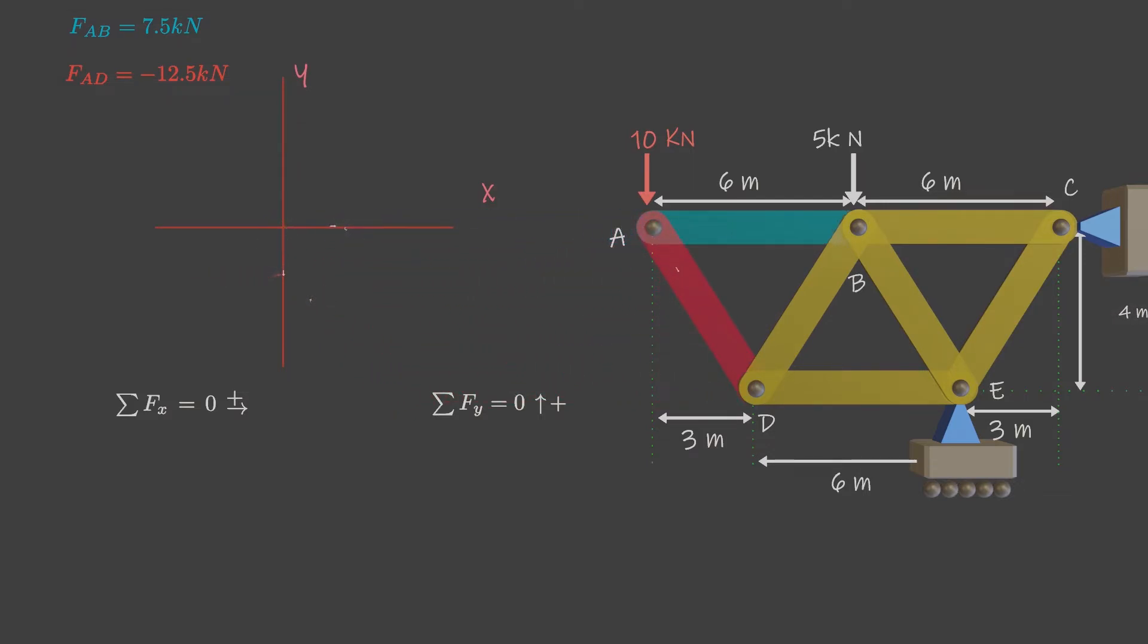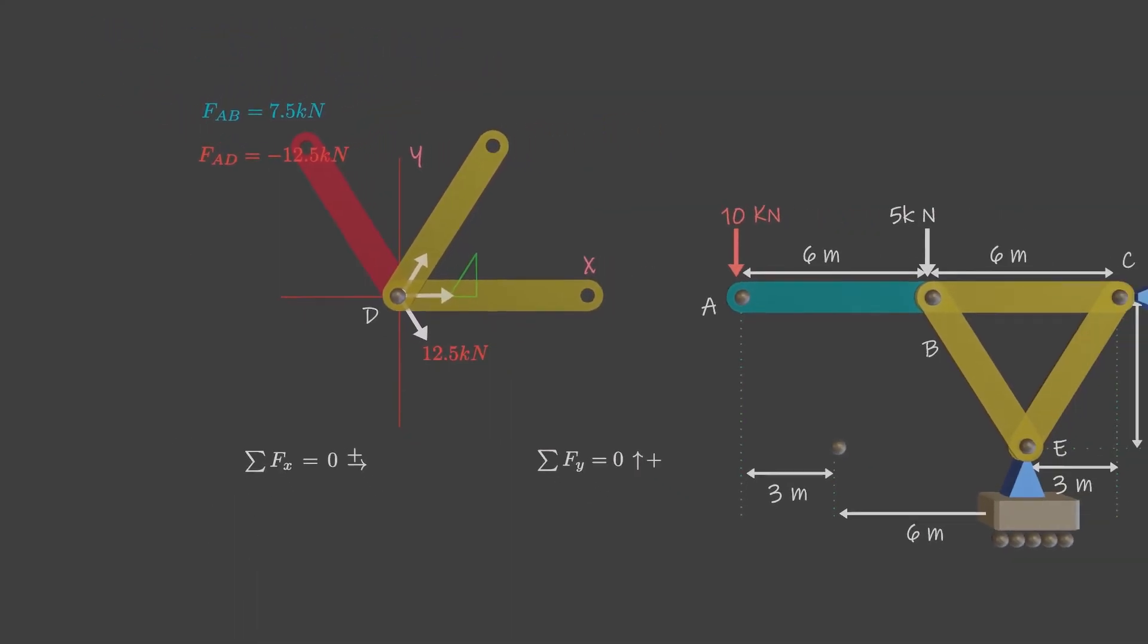Since you have already determined the force exerted by member AD, only two unknown forces are now involved at this joint D. Again, assume unknown forces in tension and solve the forces. Imagine joint as origin.